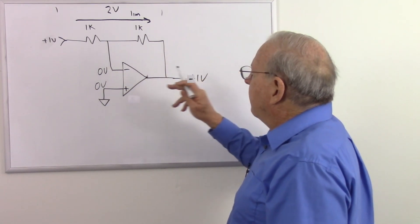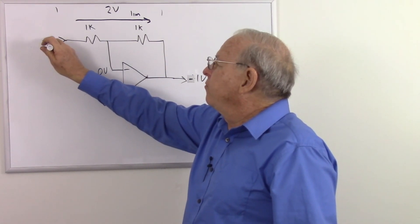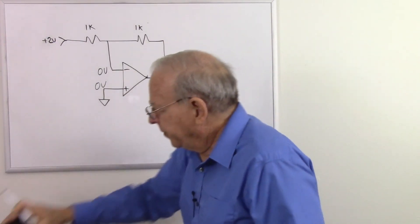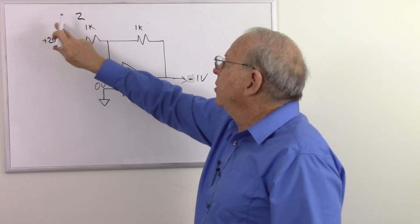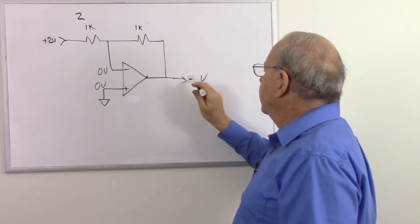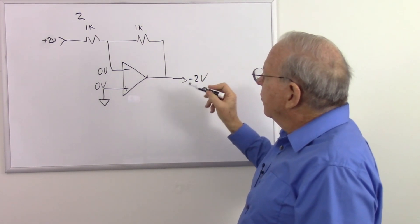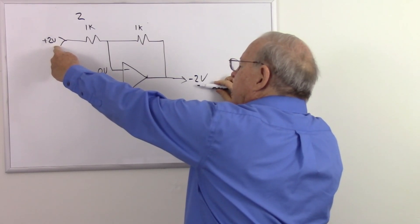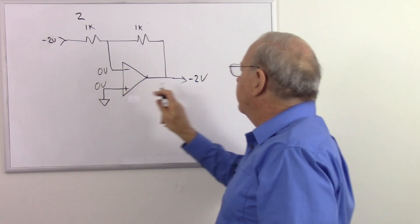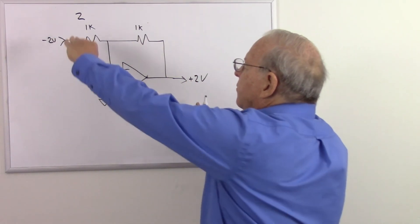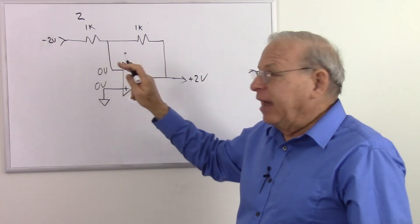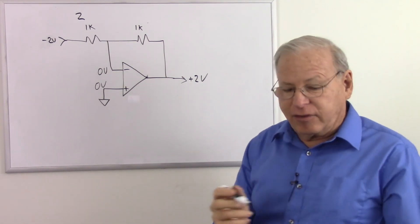Let's see what happens if we increase the input to two volts. Now we have two volts between input and summing junction — we start with two, lose two, and have to lose two more — so the output becomes minus two volts. Whatever voltage we put in, we get the opposite polarity out. If this goes up, that goes down; if that goes down, this goes up. That is the inverting amplifier.